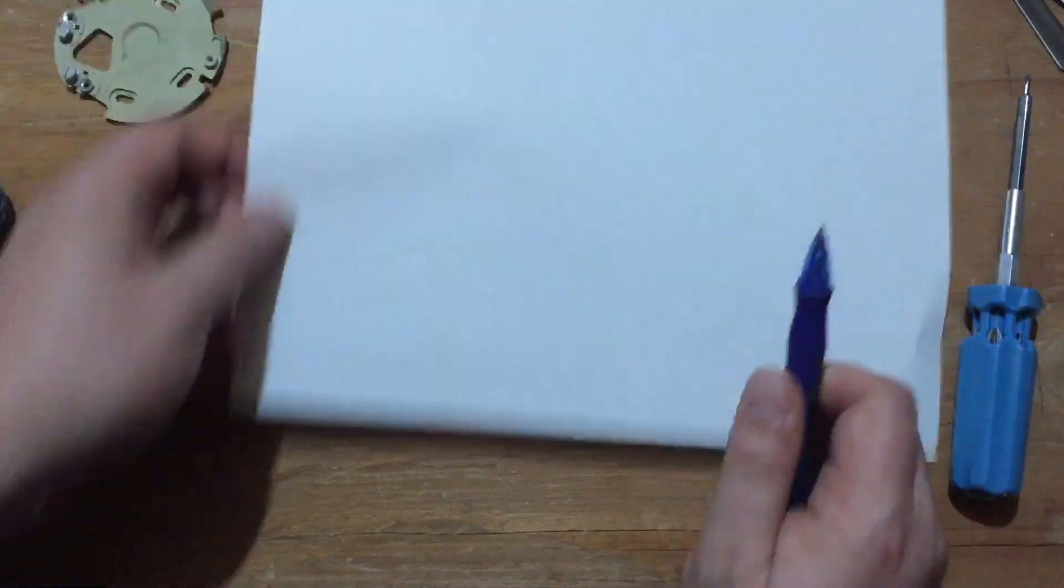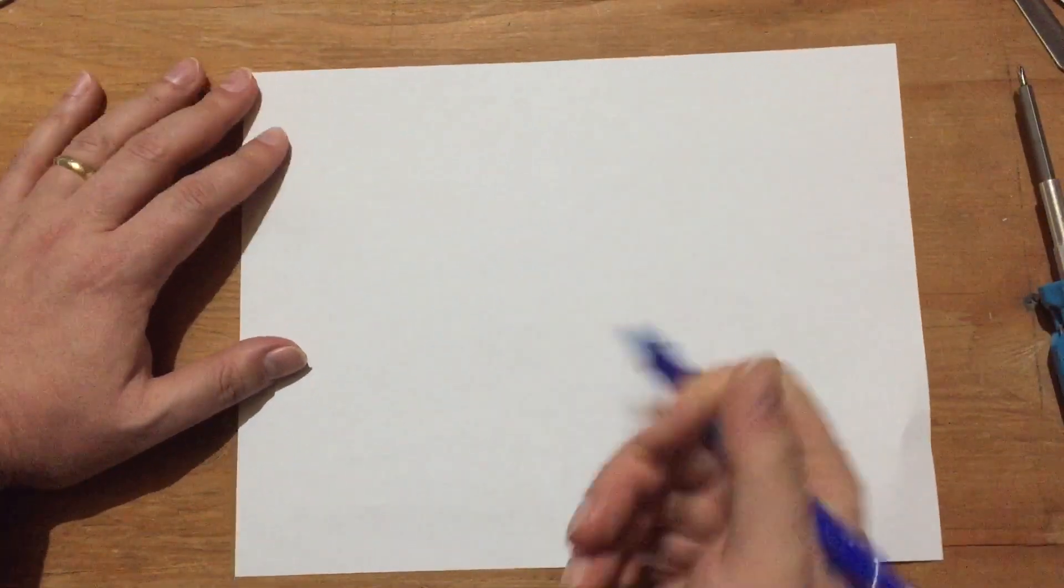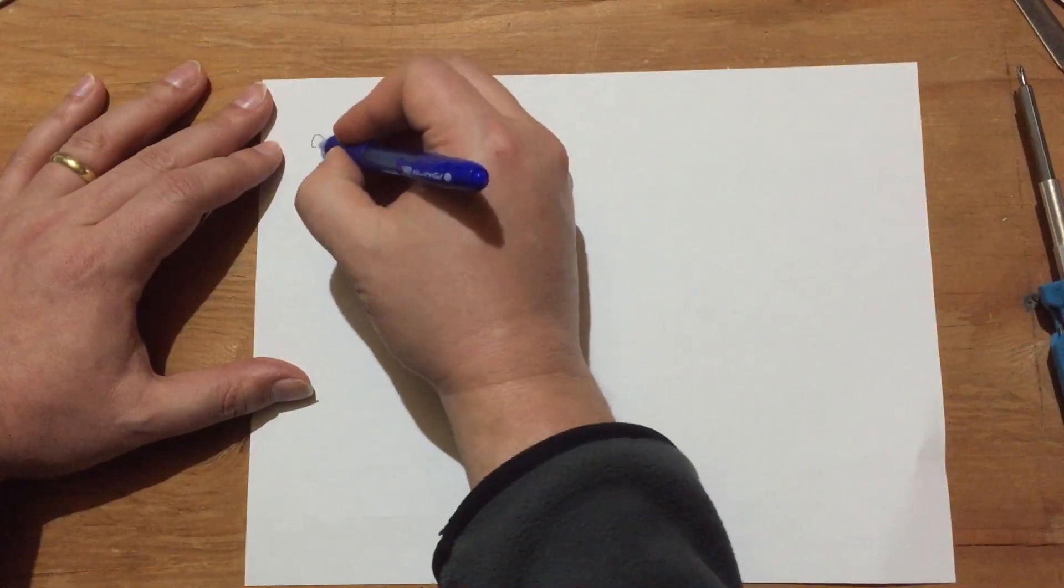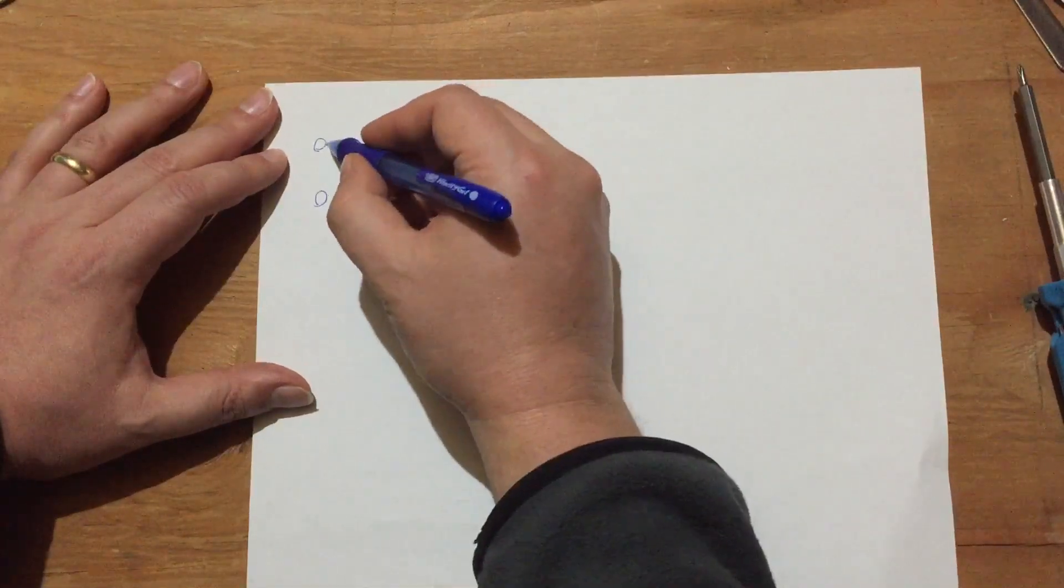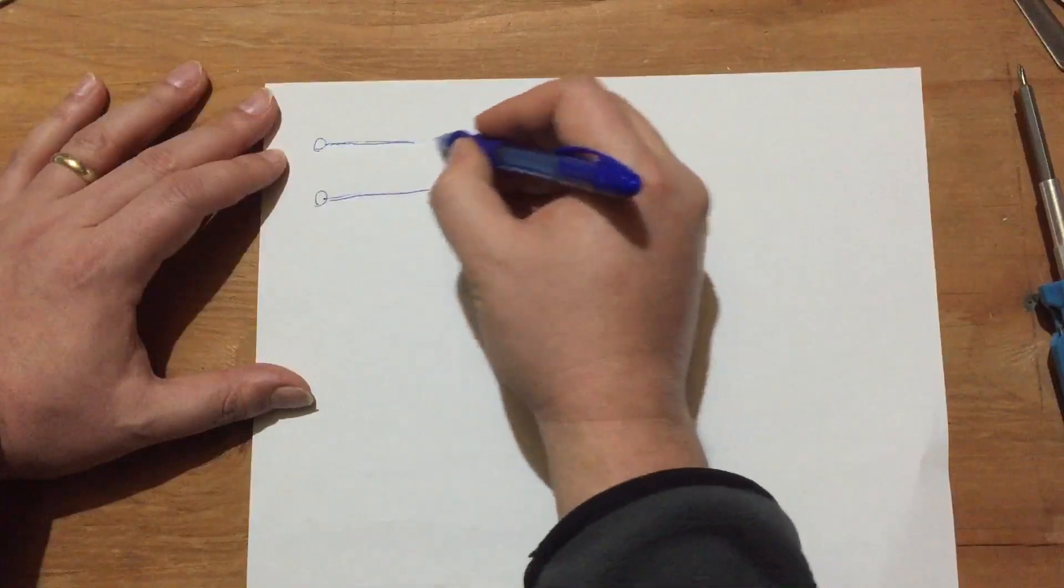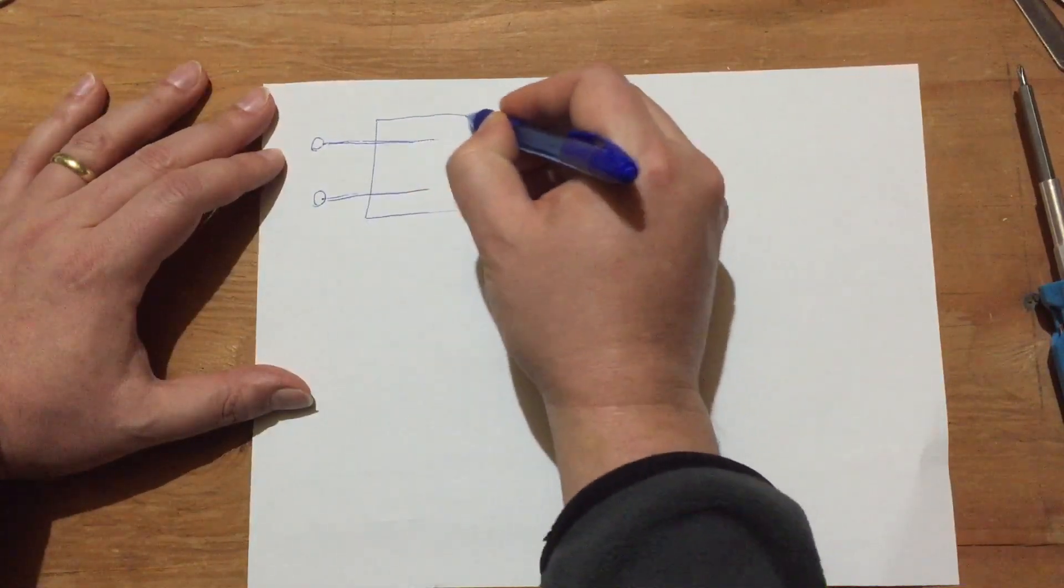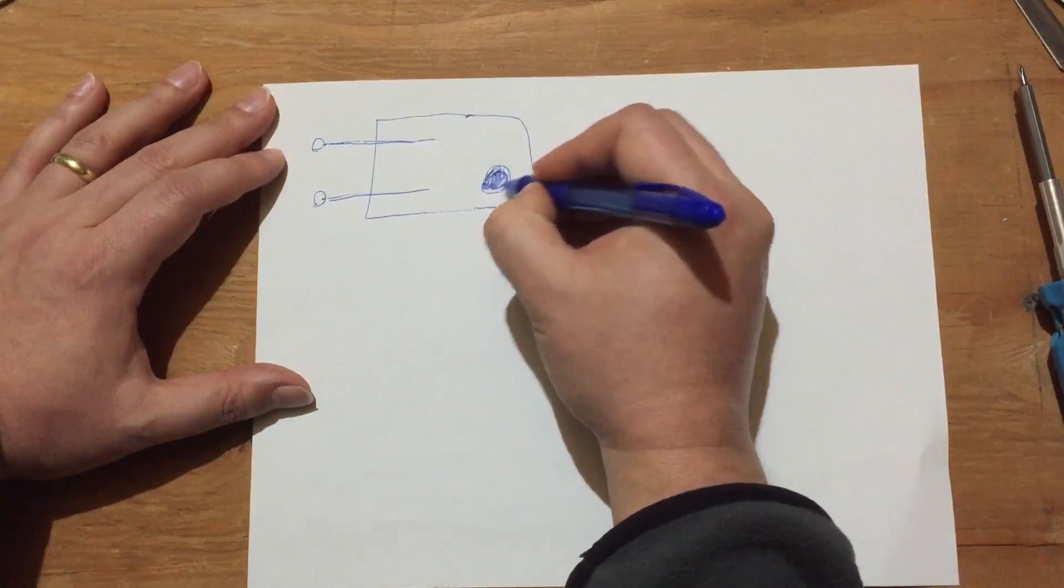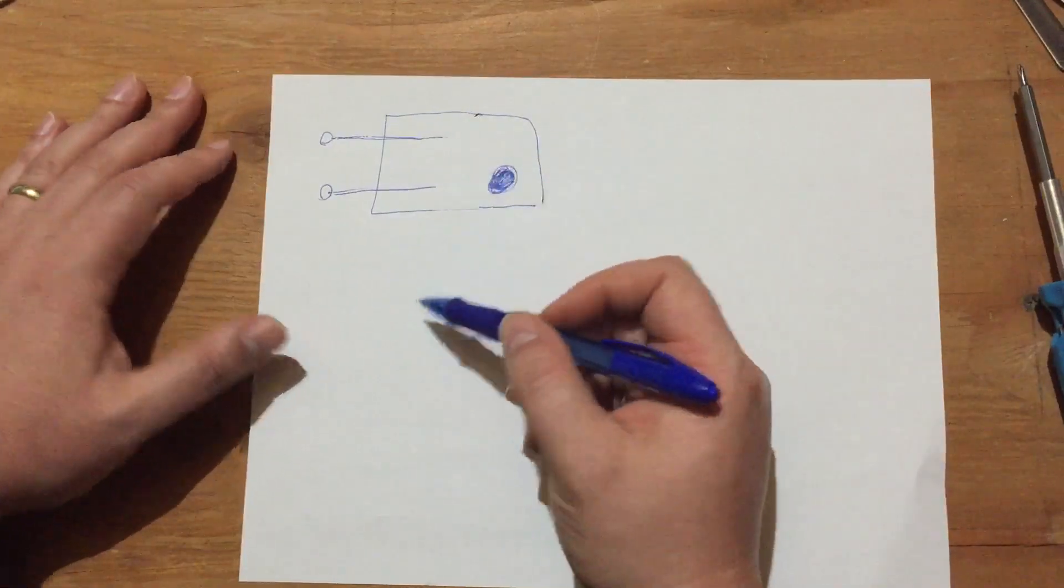So I'm going to diagram a slightly simpler version, and then we'll look at how this one works. So imagine we have the two terminals here, the red and the white, and what we have across them is this component. All right, so we have this component. Imagine that this is all we have, this is the entire electrical circuit of the thermostat.